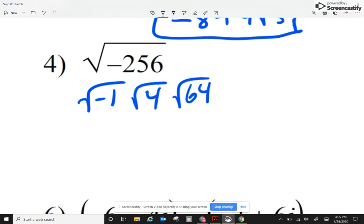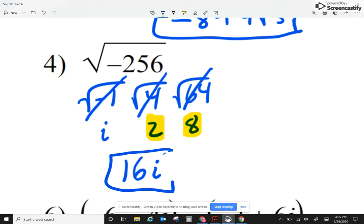256 I'm going to break it as 4 times 64. I know square root of negative 1 is i. Square root of 4 is 2. Square root of 64 is 8. When I multiply my numbers, I get 16, and then i. I have no more radicals because I'm dealing with a perfect square.